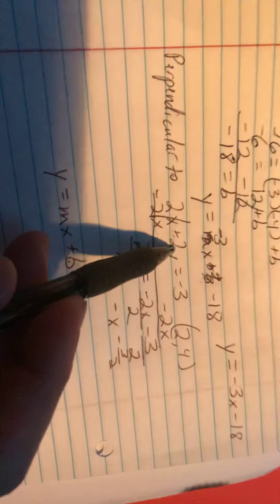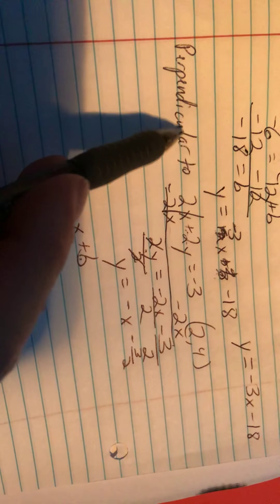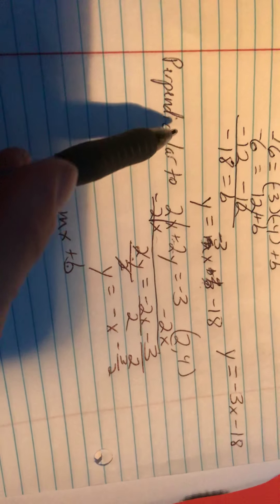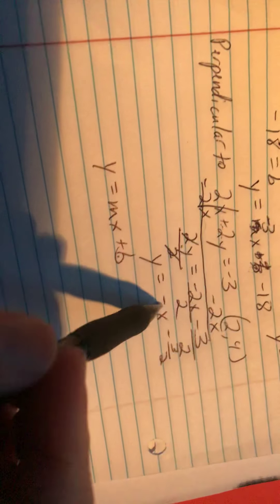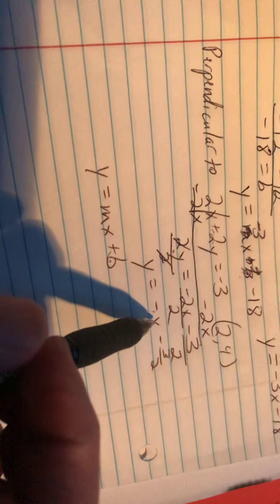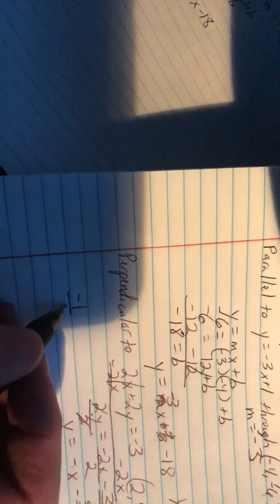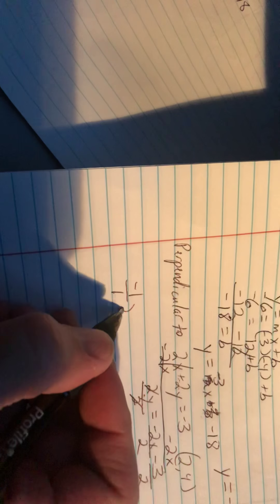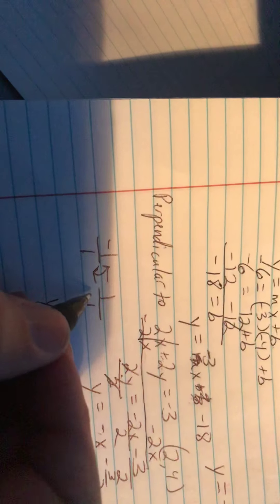So the equation of this, or I'm sorry, the slope of this line is going to be negative 1. So we need to find the slope of a line that's perpendicular to that. So we take the negative reciprocal of negative 1. The negative reciprocal of negative 1 is positive 1, because if we have negative 1 as a fraction and we flip it and change the sign, it becomes positive 1.